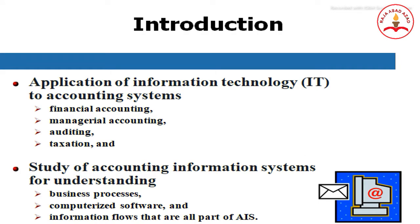In introducing the accounting information system, an organization is a collection of decision-making units that exist to pursue objectives. As a system, every organization accepts inputs and transforms them into outputs in the form of products and services. A manufacturing firm, for example, transforms raw materials, labor, and other resource inputs into tangible items such as furniture, subsequently sold in pursuit of the goal of profit.